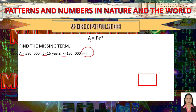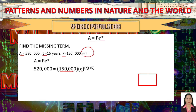Next example: given A and P, find the rate r. Using A = Pe^(rt), substitute A = 520,000, P = 150,000, and t = 15. We keep e as Euler's constant for now since we'll convert using natural logarithms. So: 520,000 = 150,000 × e^(r×15).